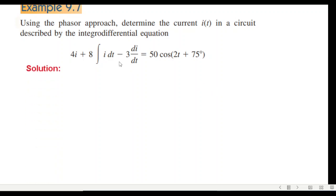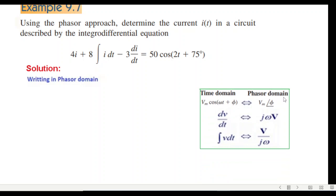Our approach would be to convert this time domain signal into phasor domain. I hope you recall I have just reproduced some of the formulas. When it is Vm cos(ωt + φ) in time domain, we can write in phasor simply the magnitude and the angle. So this we will write 50∠75°.